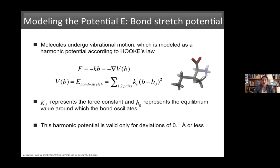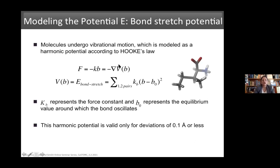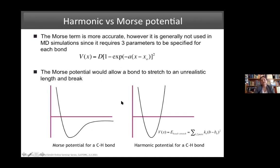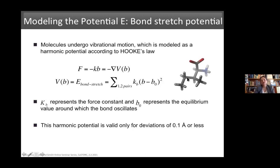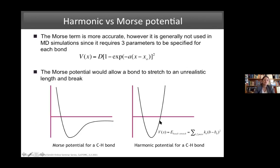To construct the potential energy, molecules undergo vibrational motion which we model as a harmonic potential according to Hooke's law. Equilibrium bond lengths are known from experiments or quantum mechanics calculations. The harmonic approximation treats the bond as a spring, though the actual potential differs because bonds can break if stretched enough. We use the harmonic approximation because more accurate potentials like the Morse term have three parameters instead of two and are computationally less efficient.